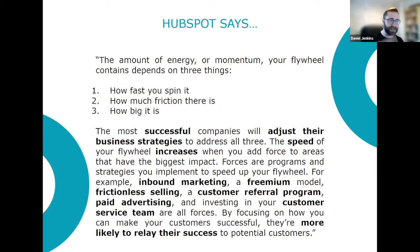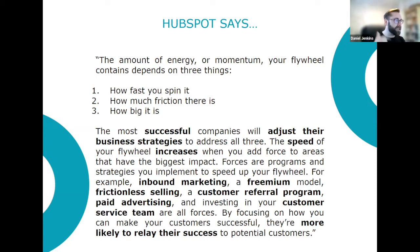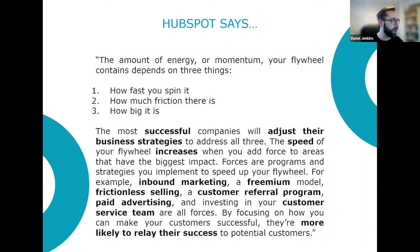That friction element is key. Like any turning wheel, it's only going to turn as fast as the momentum working with it — if you jar that progress, if you hit a bump in the road, the whole system falls apart. The same applies to your sales and marketing alignment post-sale. The most successful companies adjust their strategies to address all three elements. The speed of your flywheel increases when you add force to areas with the biggest impact — forces are the programs and strategies you implement.